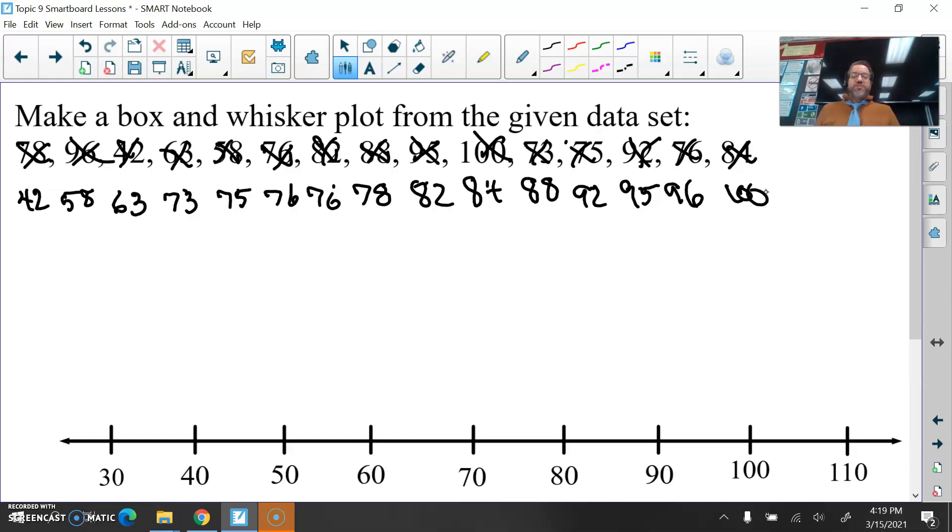All right. I have 15 scores here, 15 numbers in this data set. So I need to find the second quartile, which is the median of this entire set of numbers. Since there are 15 here, I want to find a number that has 7 to the left and 7 to the right. One, two, three, four, five, six, seven. This 78 has 7 to the left of it and 7 to the right of it. So my median is 78. That's the second quartile. See how easy that is? Just find the median of the entire data set.